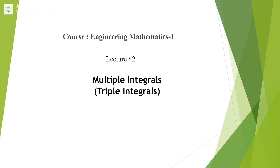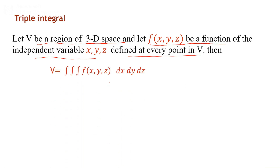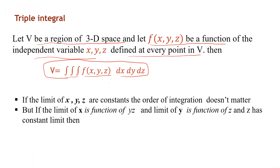In this lecture 42 on multiple integrals, I explain the triple integral. Let V be a region of three-dimensional space, and let f(x,y,z) be a function where x, y, z are independent variables, defined at every point of that region V. Then the triple integration is denoted by the triple integral f(x,y,z) dx dy dz, which represents the volume.